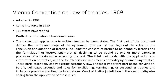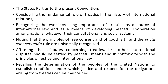The most important part of the convention is Part 5, which delineates grounds and rules for invalidating, terminating, or suspending treaties, and includes a provision granting the International Court of Justice jurisdiction in the event of disputes arising from the application of those rules. Looking at the preamble of VCLT 1969, it says the state parties, considering the fundamental role of treaties in the history of international relations.